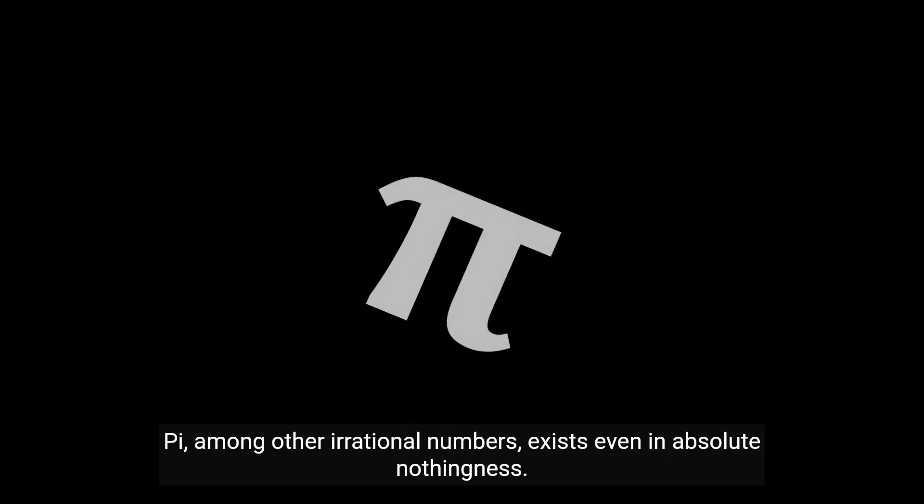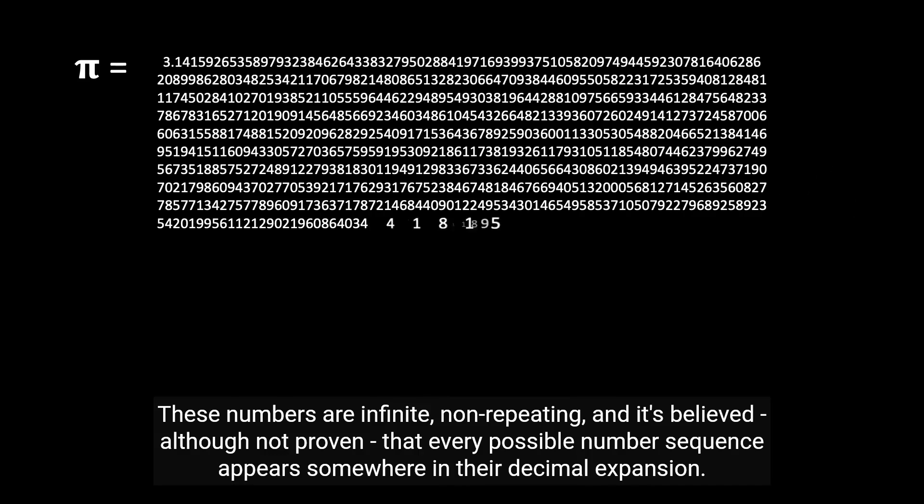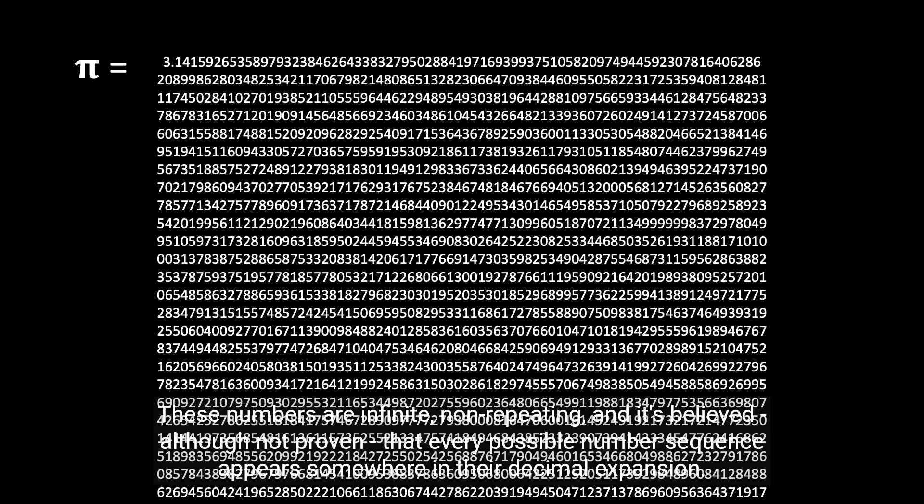Pi, among other irrational numbers, exists even in absolute nothingness. These numbers are infinite, non-repeating, and it's believed, although not proven, that every possible number sequence appears somewhere in their decimal expansion.